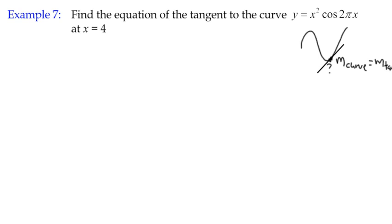So the first thing we're going to work out is the gradient. Gradient is the rate of change of the curve. In other words, it's to do with the derivative. So my function starts y equals x squared cos, I'm going to put that in brackets to remind us that it's a composite function, cos 2πx.